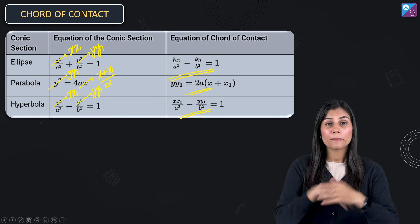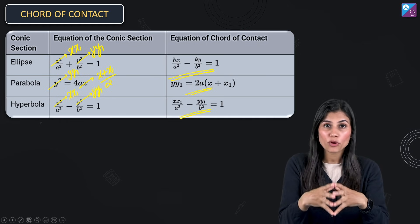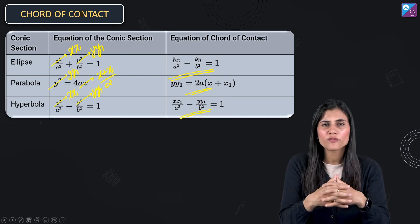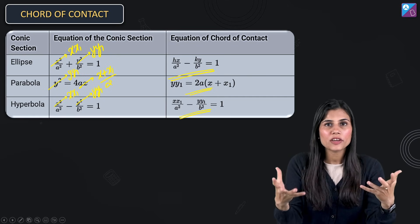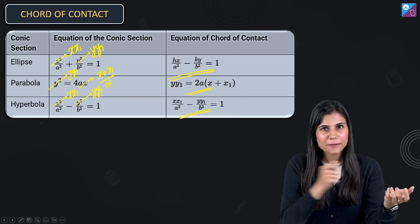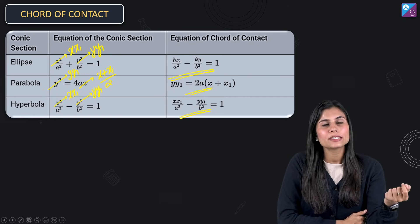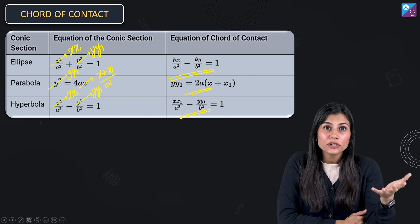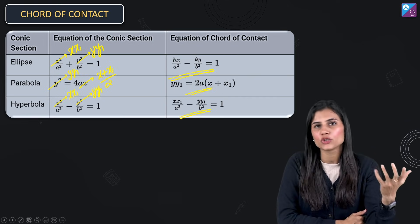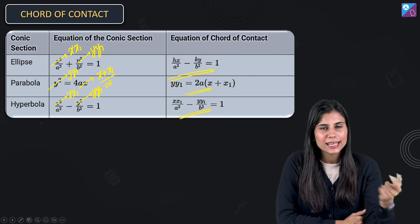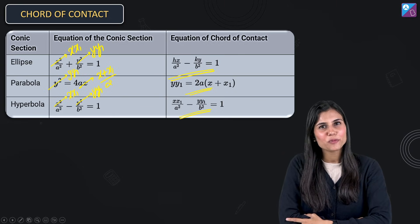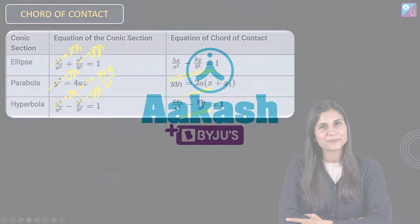These were the most important formulas from conic sections from which questions are almost always asked in the paper. Let me know in the comments which other chapter's formulas, results, or theorems you wish to revise and I will come up with that in my next session. Thank you so much, take care.